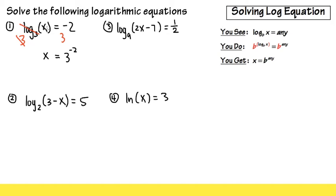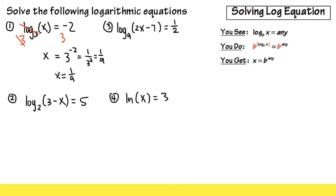This is x by itself already, because that was the thing inside. And now we just have to work out 3 to the negative 2 power. This is the same as 1 over 3 to the positive 2 power, because of the negative exponent rule. Then 3 times 3 on the bottom is 9, so altogether it's 1 over 9. So x is equal to 1 over 9 for the first answer.